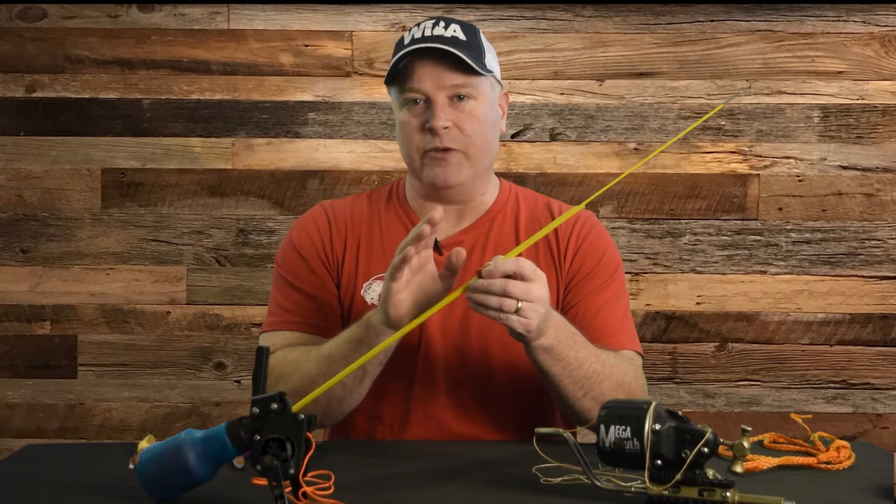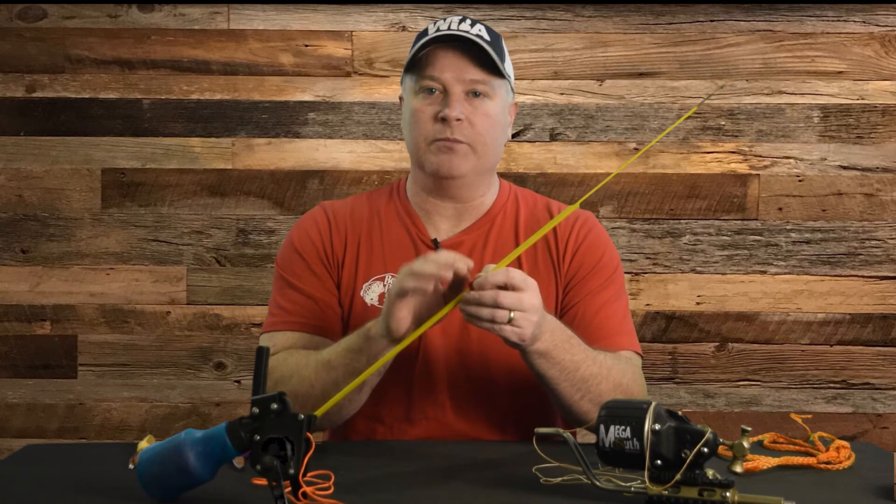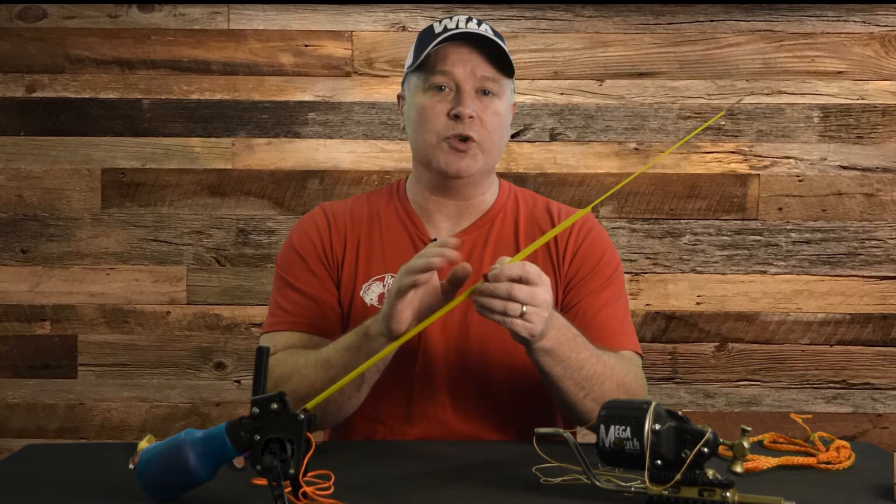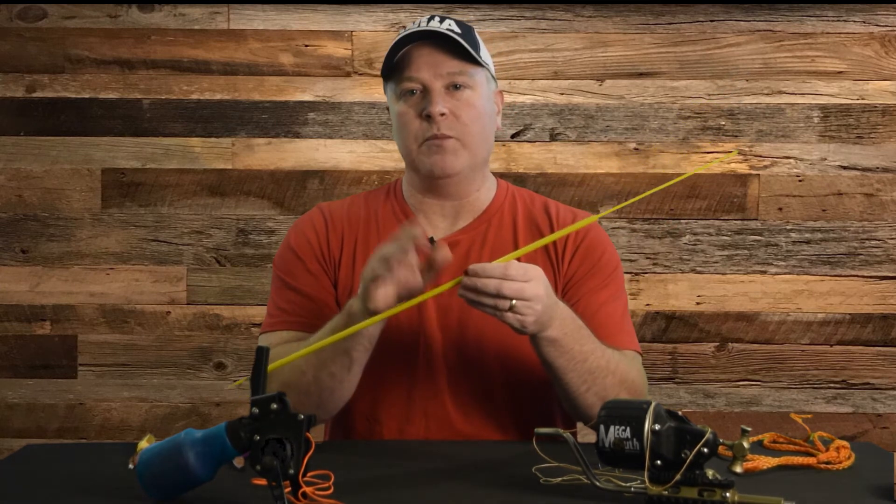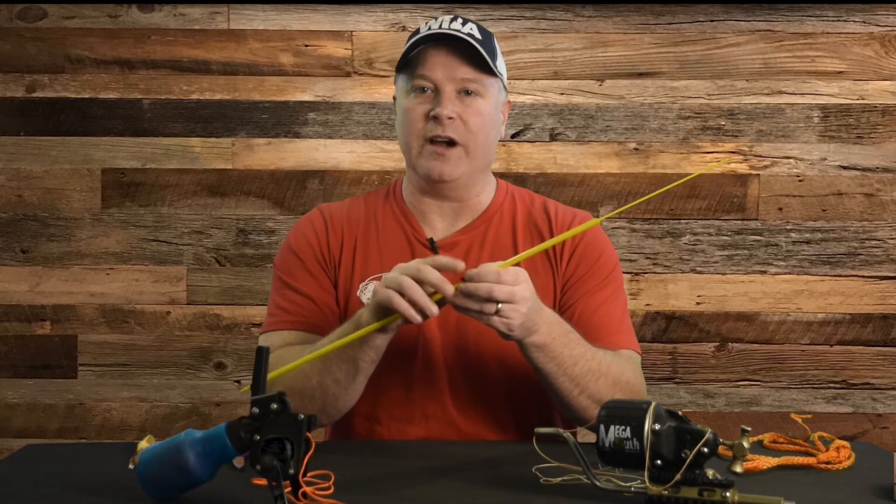These attachment techniques come in really handy if you lose a tip, break a nock, or happen to shoot all the way through a fish. You can simply loosen the connection, run the loop up around the arrow, and then pull the line through. Reattaching your arrow is just as easy, and there's no need to cut anything.